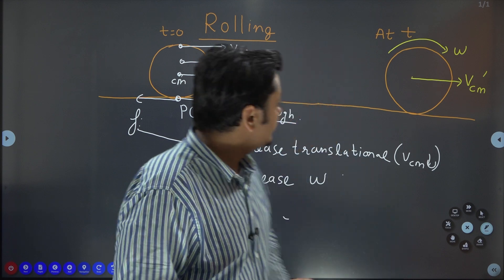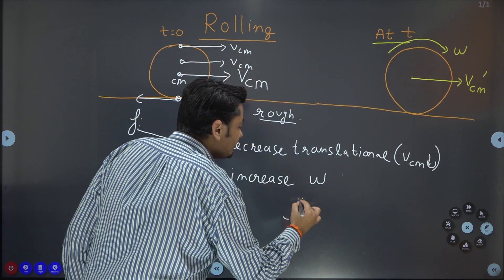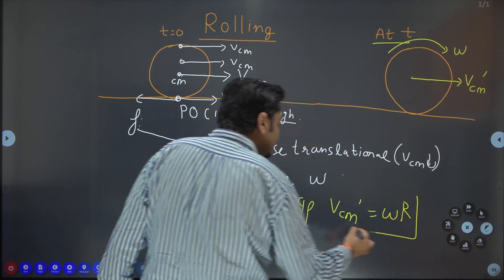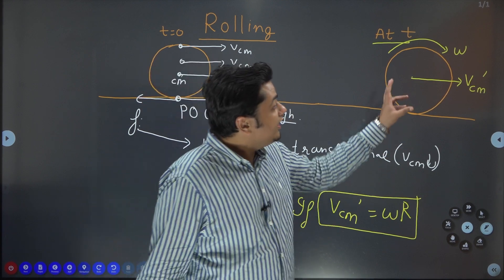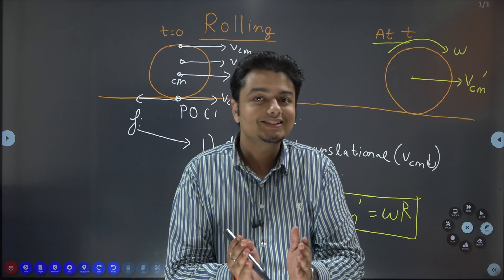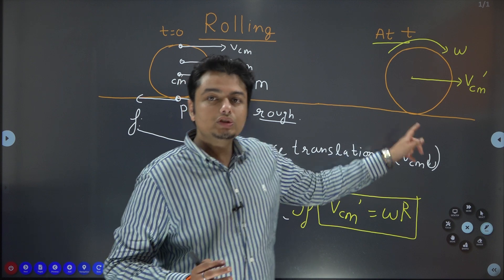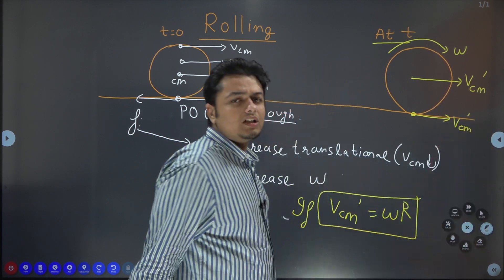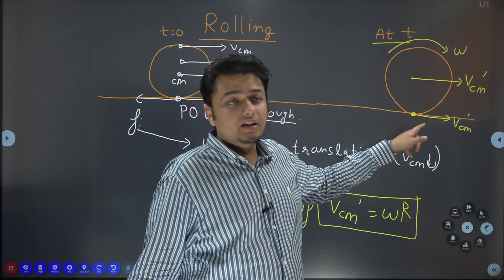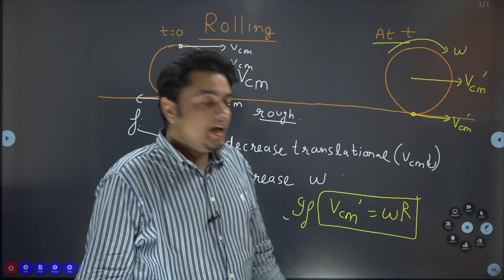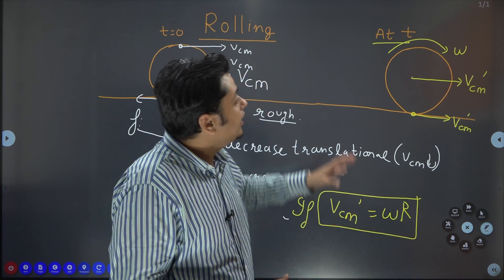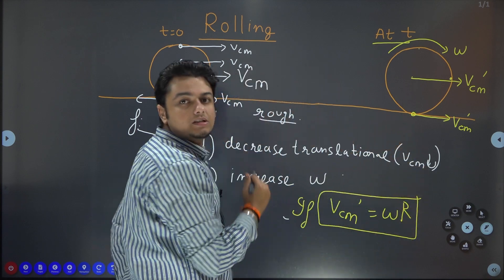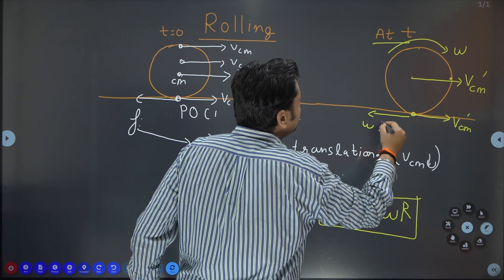Now, a very very important point I am trying to say here. If at this time t, if VCM dash equals to omega r, very important point. If you break this motion into 2, only translation and only rotational, then you will definitely see that POC will be having two types of speeds. One will be provided by the complete translation that is VCM dash. At POC you have a translational velocity VCM dash and due to only circular rotational motion you will have linear speed at this point omega r, at this point omega r downwards, at this point omega r backwards. So, this will be omega r in the backward direction.